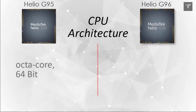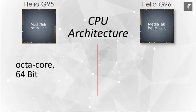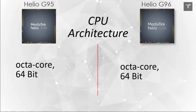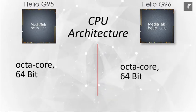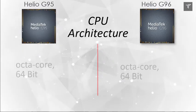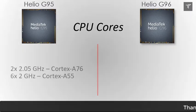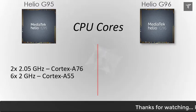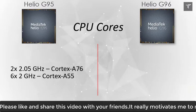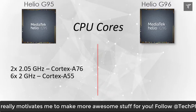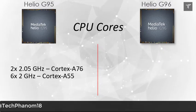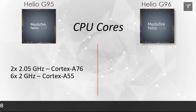The CPU architecture on both processors is octa-core and both are based on 64-bit. In terms of speed, the Helio G95 has two cores at 2.05 GHz Cortex-A76 and six cores at 2 GHz Cortex-A55. The Helio G96 has almost the same core configuration with not much difference.